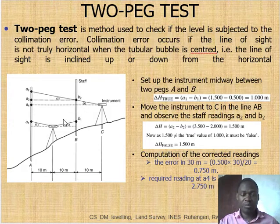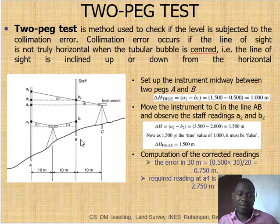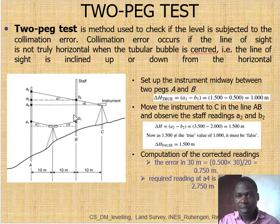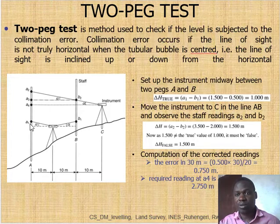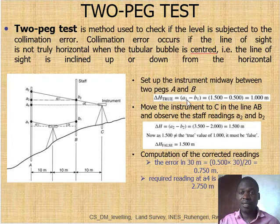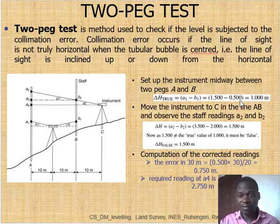We set up the instrument midway between pegs A and B. You are going to take readings A1 and B1, and those readings include the collimation error. To compute the true value of the difference in elevation between A and B, you take reading A1 minus B1, which is equal to 1.5 minus 0.5 meters, which equals 1 meter.